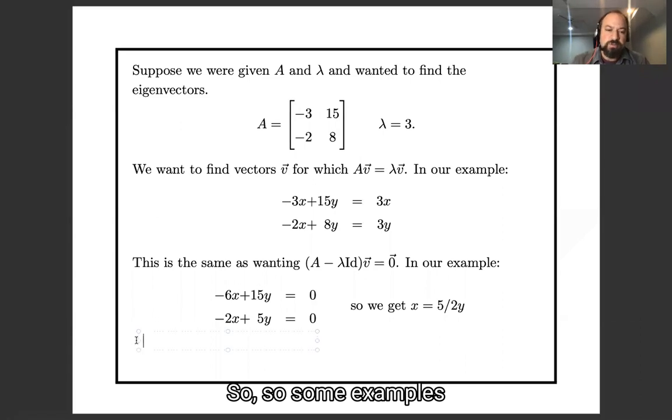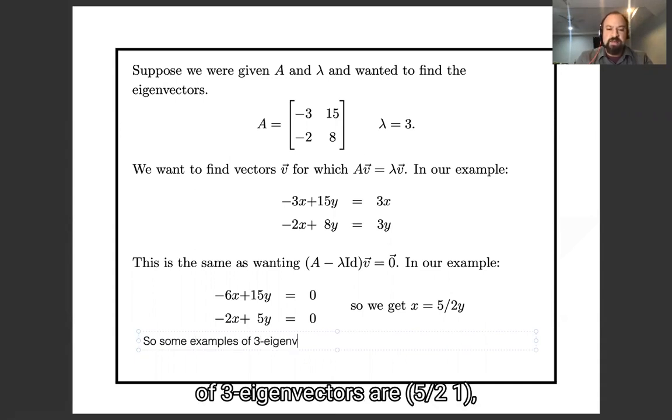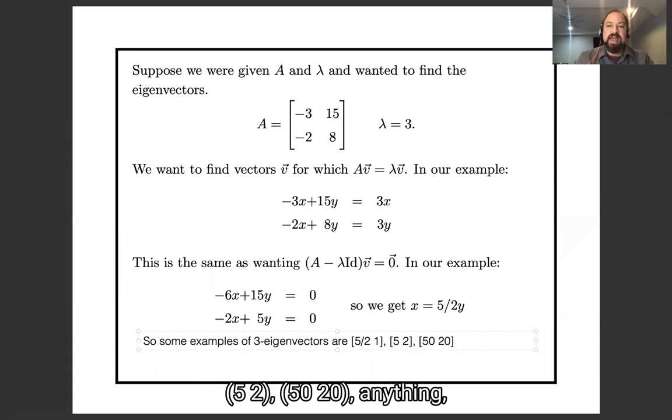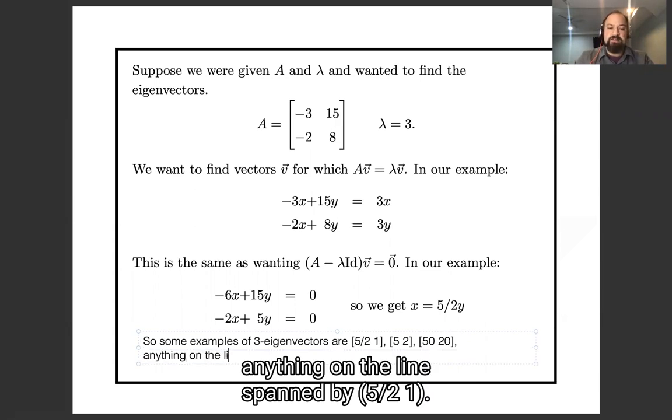So some examples of three eigenvectors are five halves one, five two, 50 20, anything on the line spanned by five halves one.